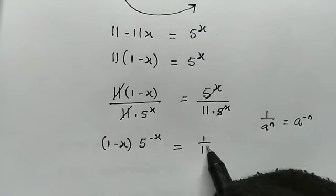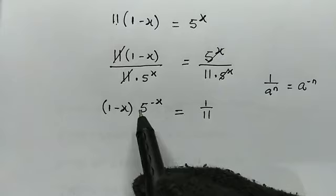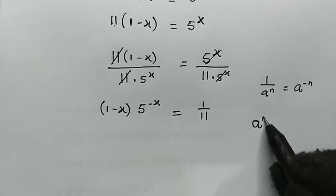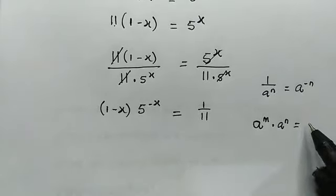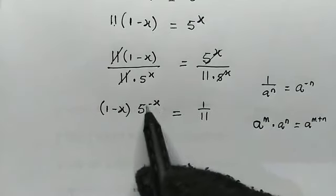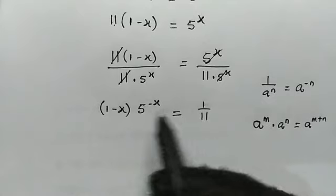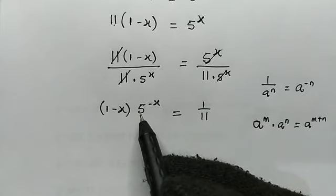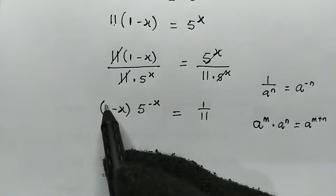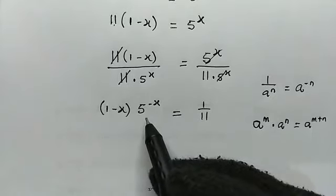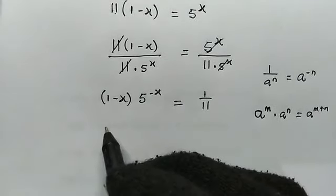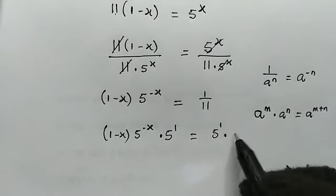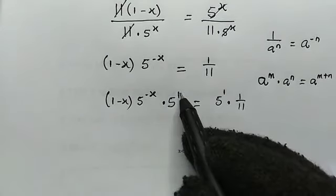This will be equal to 1 over 11. Now in our next step, we need to make the power of 5 equal to the coefficient. Let us take note that a raised to m multiplied by a raised to n — since they have the same base — we sum the powers, giving m plus n. So we need to multiply both sides by something with base 5. The coefficient here is 1, so we multiply both sides by 5 to the power of 1. So we have 1 minus x times 5 to the power of negative x times 5 to the power of 1 equal to 5 to the power of 1 times 1 over 11. The power negative x plus 1 is the same as 1 minus x.